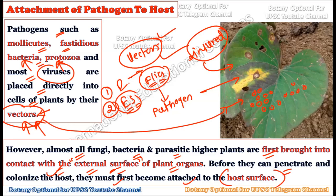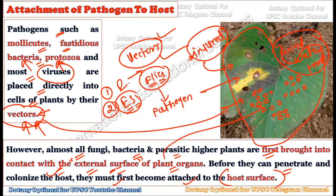Before the pathogen can penetrate and colonize the host, it must first become attached to the host surface. This is also not very easy — abiotic factors like wind, water, and temperature can interfere with attachment. Many plants also have hydrophobic surfaces, making attachment to the host surface an important initial step of the infection process.